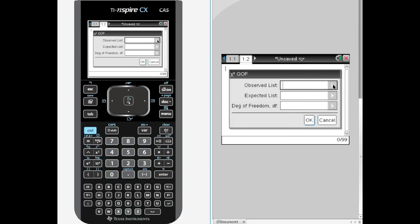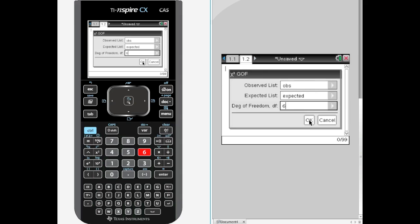So it opens up. It says what is your observed list? Well we named it expected. And you are having to do some manual calculations so you will have to tell that calculator what the degree of freedom is. We had 7 cells in the table and degree of freedom is k-1. So 7-1 is equal to 6. And hit ok and voila! The chi-square statistic is 21.03.